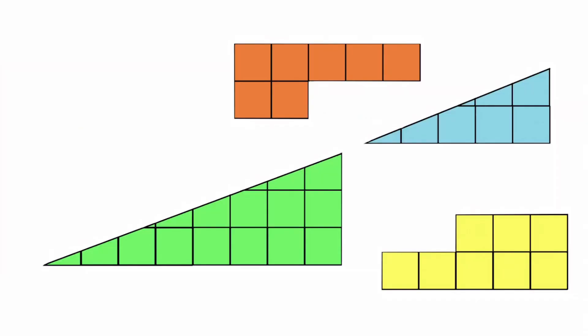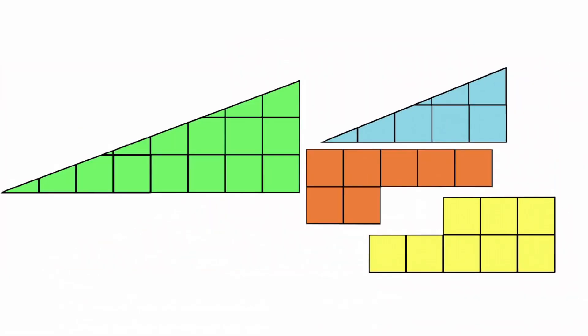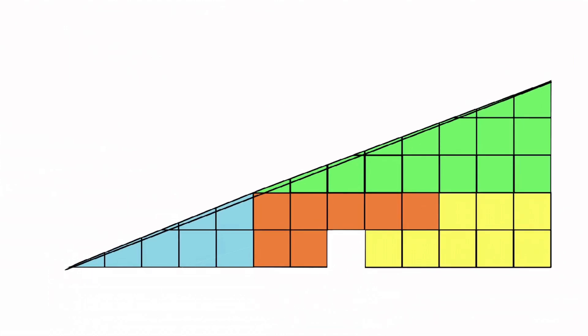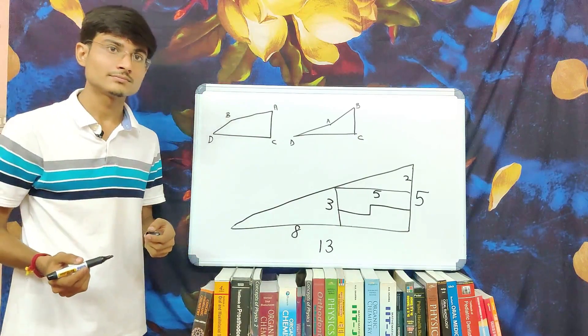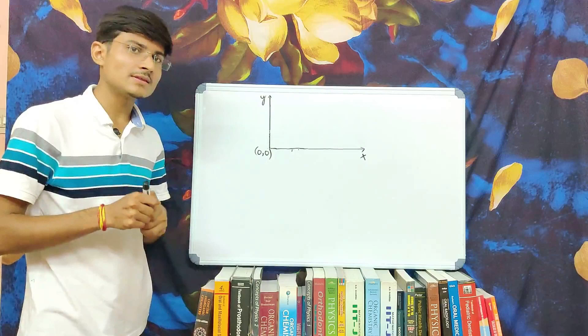The triangle we have assumed here is not a triangle actually, it's a quadrilateral even after the rearranging. Now let us see the graphical representation.